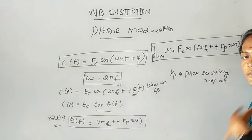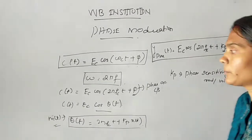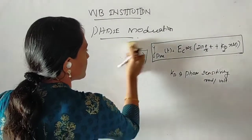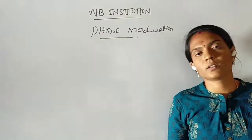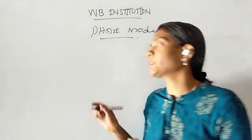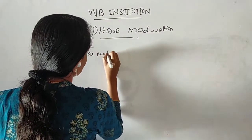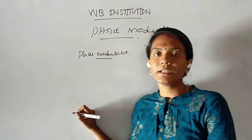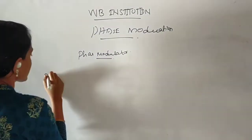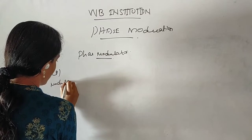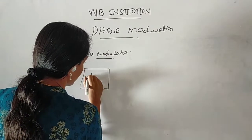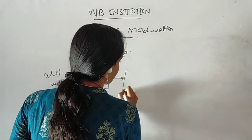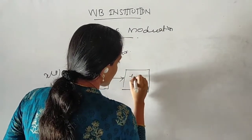Next, let's look at the block diagram of a phase modulator. In the block diagram, first we have x(t), the modulating signal, which is sent into a differentiator. The output is dx/dt, and this differentiated modulating signal is then sent into a frequency modulator to produce the PM wave output.